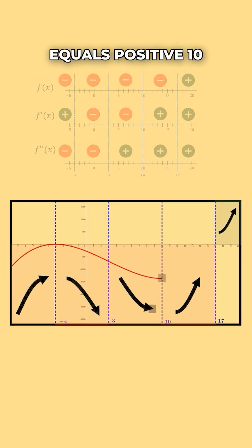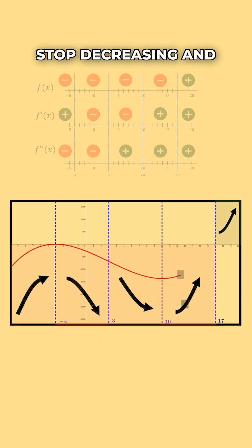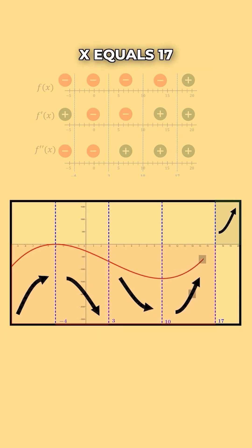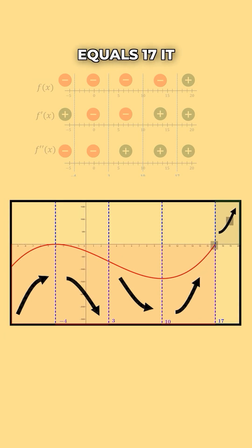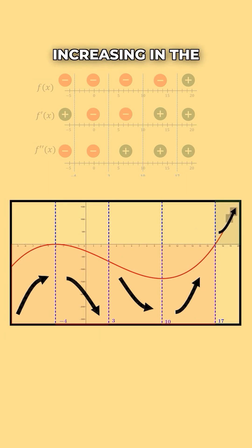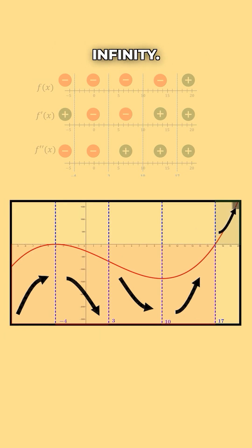At x equals positive 10, our function will stop decreasing and turn around and go up until x equals 17, and in that section it will remain below the x-axis. At x equals 17, it will cross the x-axis and continue increasing in the same pattern as x goes to infinity.